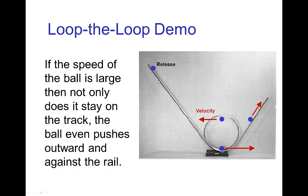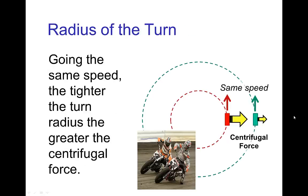If it's released high enough and has enough speed when it's at the upside down on this track, the centrifugal force can be large enough to keep it from falling off. Notice that if you don't have enough speed on the track, then the ball falls down.